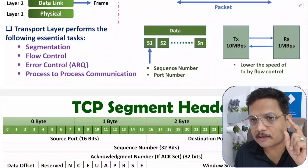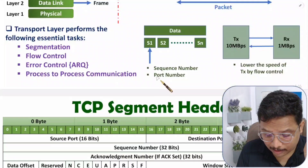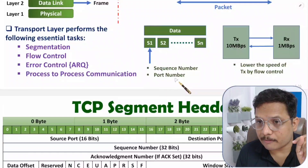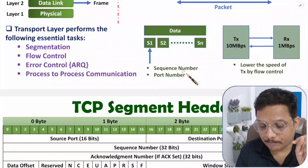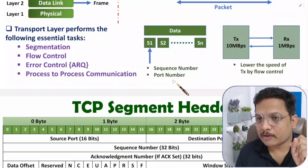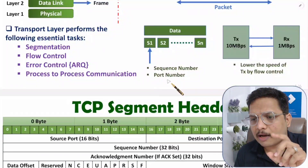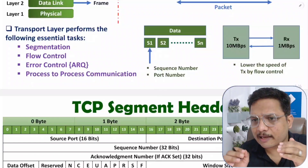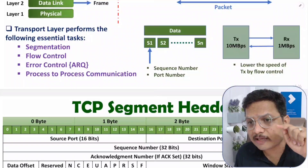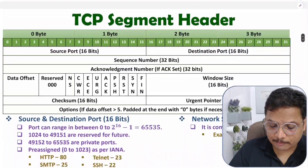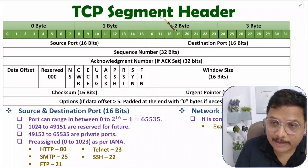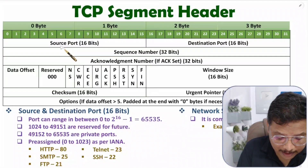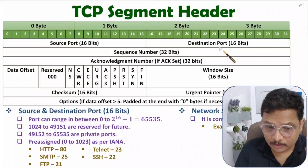With all processes, there will be a well-defined code number, and along with data we provide a sequence number. You need to understand how processes are identified with respect to which application you execute on your mobile or computer. With each given process there will be a well-defined code number. If you observe the TCP segment header, the first part is source port and destination port.